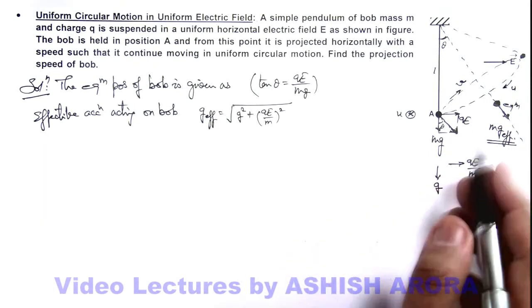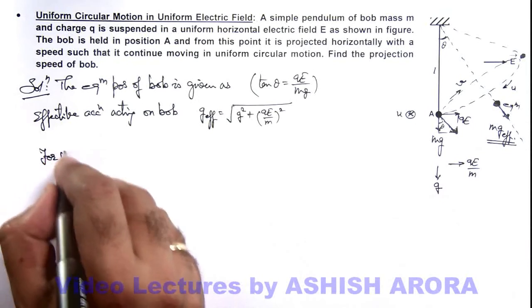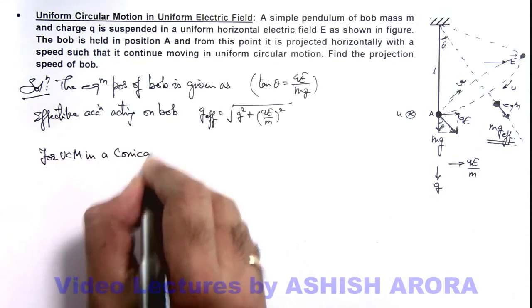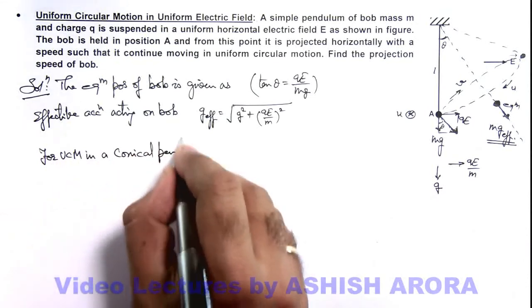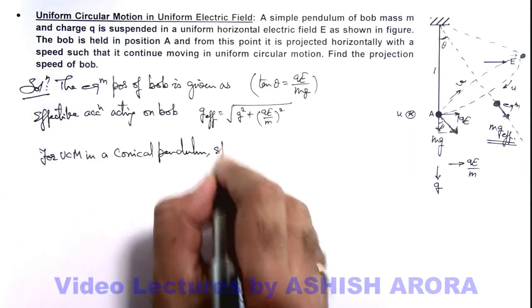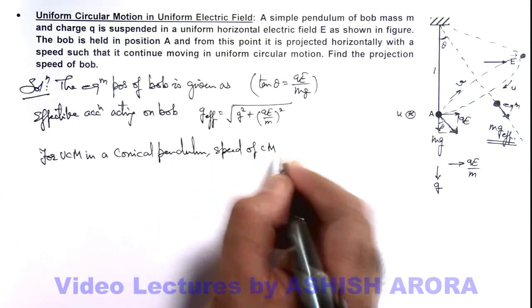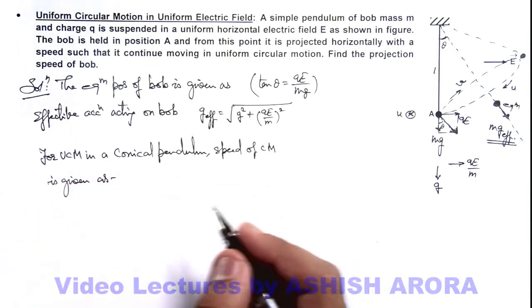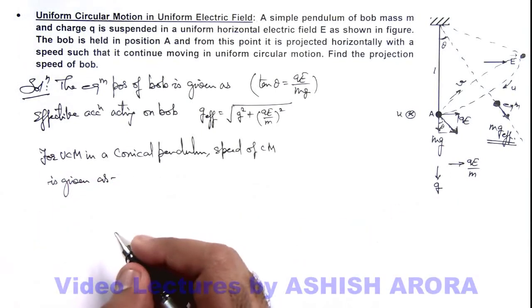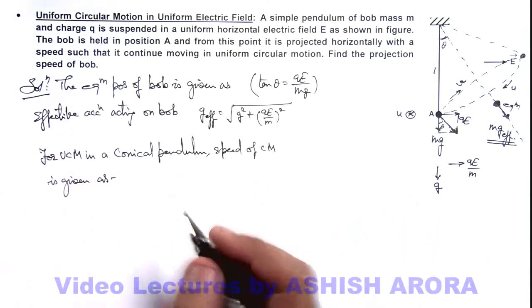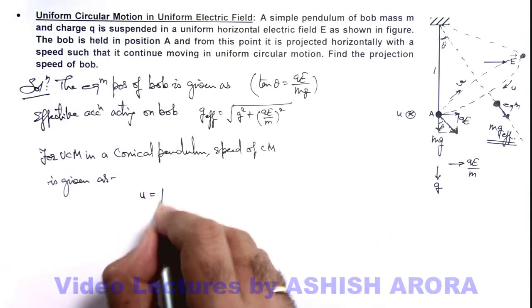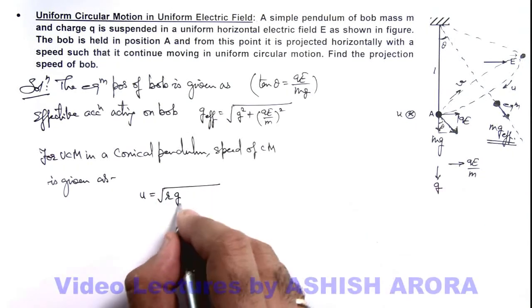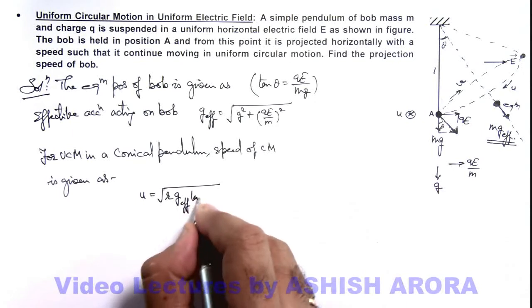So here we can write for uniform circular motion in a conical pendulum, speed of circular motion is given as, this we already studied in concept videos, you can have a review of that. Where we have studied that speed is given as square root of r g tan(theta), so here it'll be r, instead of g we take as g_effective multiplied by tan(theta).